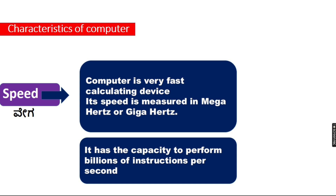Basically, we will look at the characteristics. First is speed. The speed is measured in megahertz and gigahertz, and the computer has the capacity to perform billions of instructions per second.